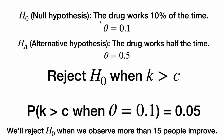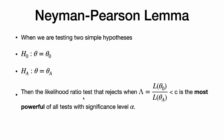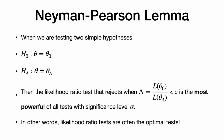15 people is enough to make us doubt the null hypothesis and reject it. Why are likelihood ratio tests so good? We have something called the Neyman-Pearson lemma. When we are testing two simple hypotheses — where theta equals some number theta-zero versus a simple alternative theta equals 0.5 — the likelihood ratio test that rejects when our likelihood ratio is less than c is the most powerful of all tests with significance level alpha. Out of all level-alpha tests with type 1 error rate 0.05, the likelihood ratio test has the highest power and the greatest ability to reject the null when we should.